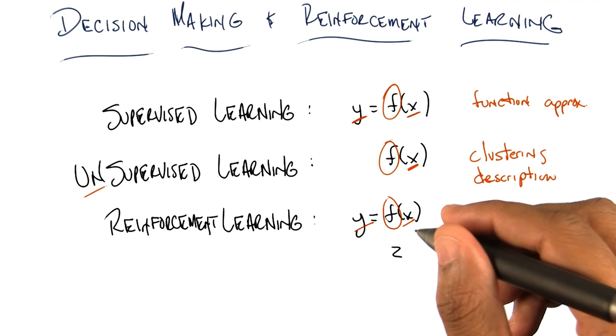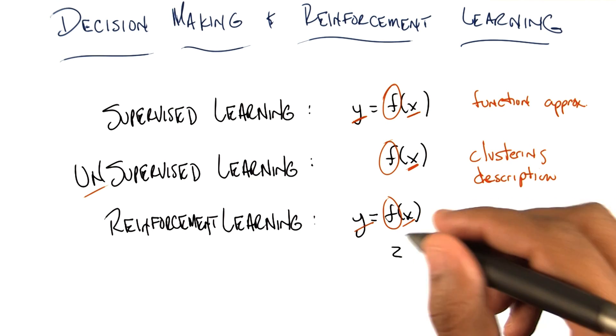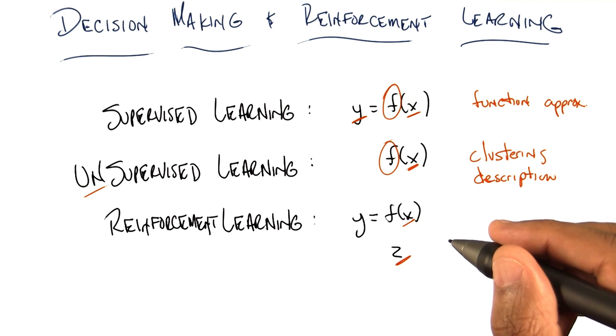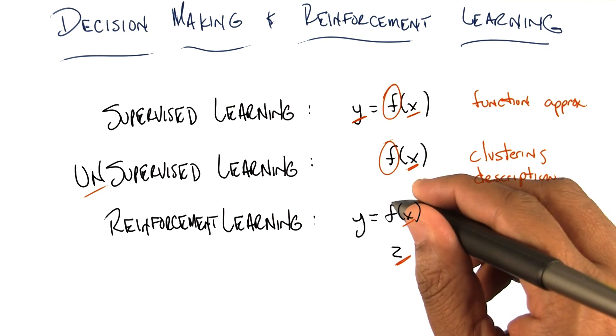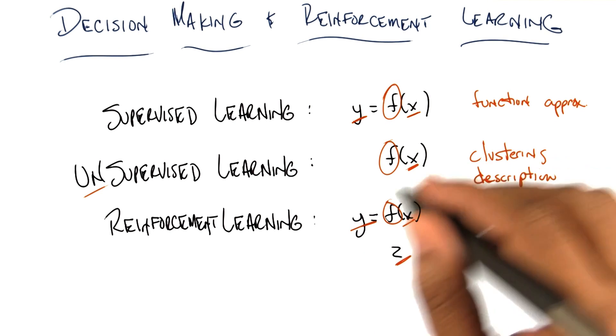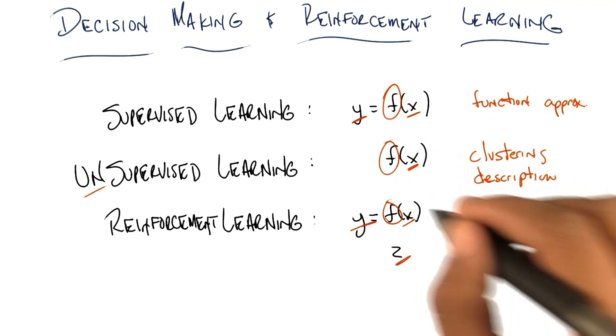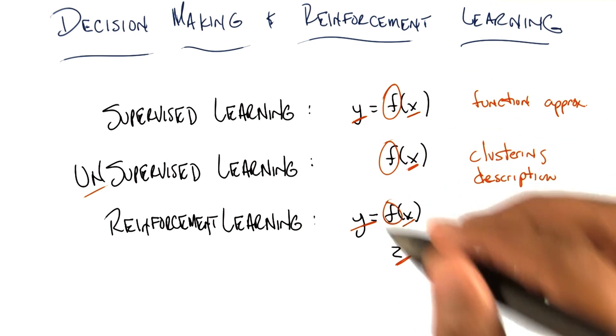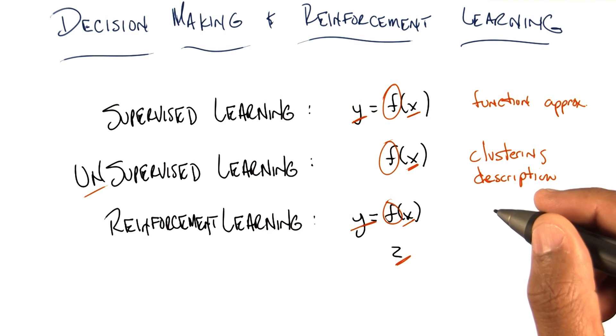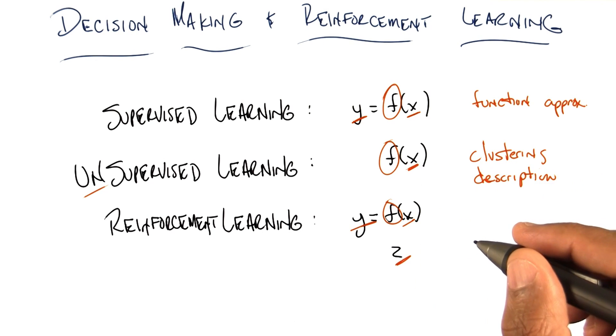But in reinforcement learning, we're going to be given something totally different. We are instead going to be given x's and z's. And I'll tell you what the x's and the z's stand for in a minute. And then we're going to have to learn some f that is going to generate y's. And so, even though it's going to look a lot like function approximation, it's going to turn out that it's going to have a very different character. And that's really what the next few slides and a little bit of discussion is really about, is understanding what that character is.